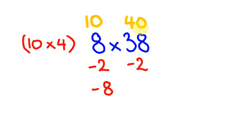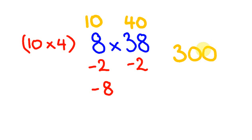Now we take this number 38 and diagonally take off the minus 8: 38 minus 8 is 30, and we times it by 10, giving 300. That's the first part of our answer. The last step is to multiply the two differences: minus 2 times minus 2 is 4, and we add that on to get the final answer of 304.